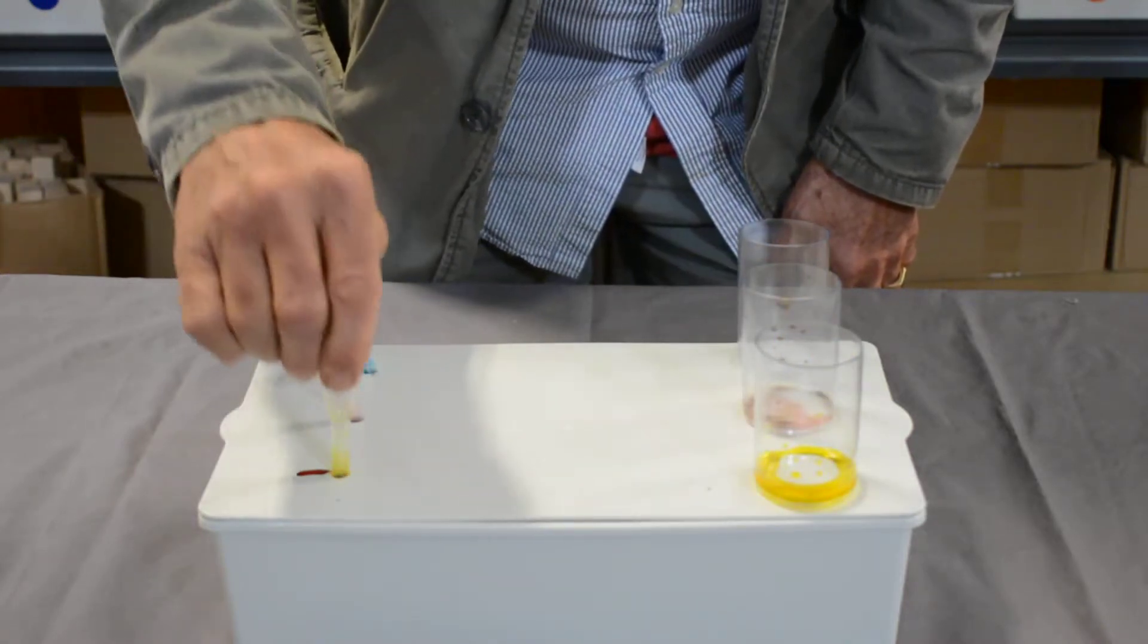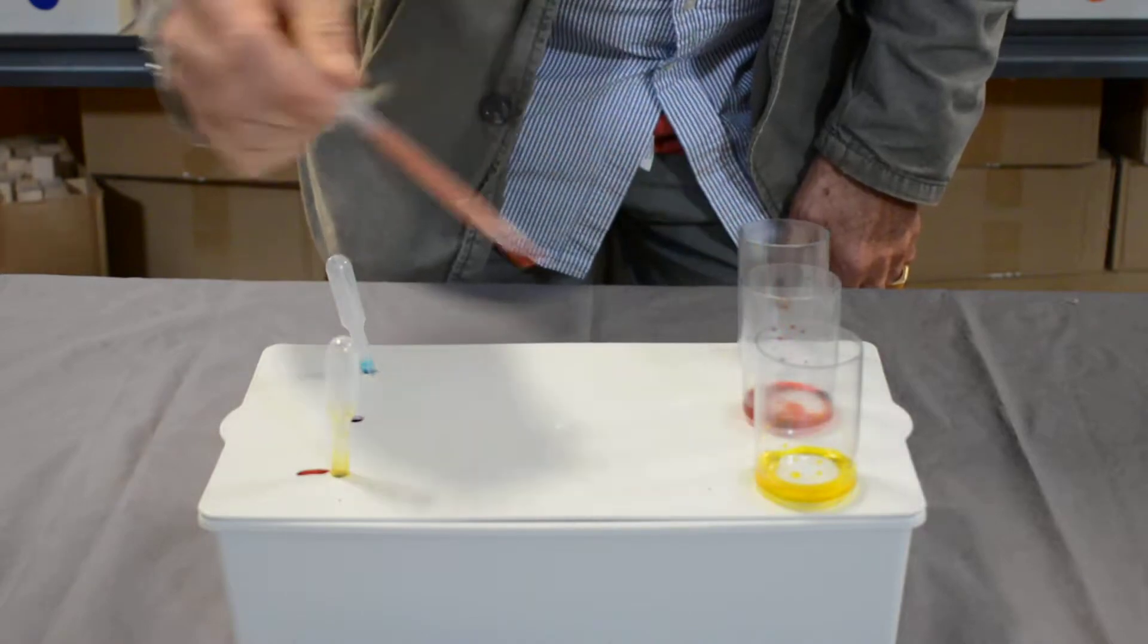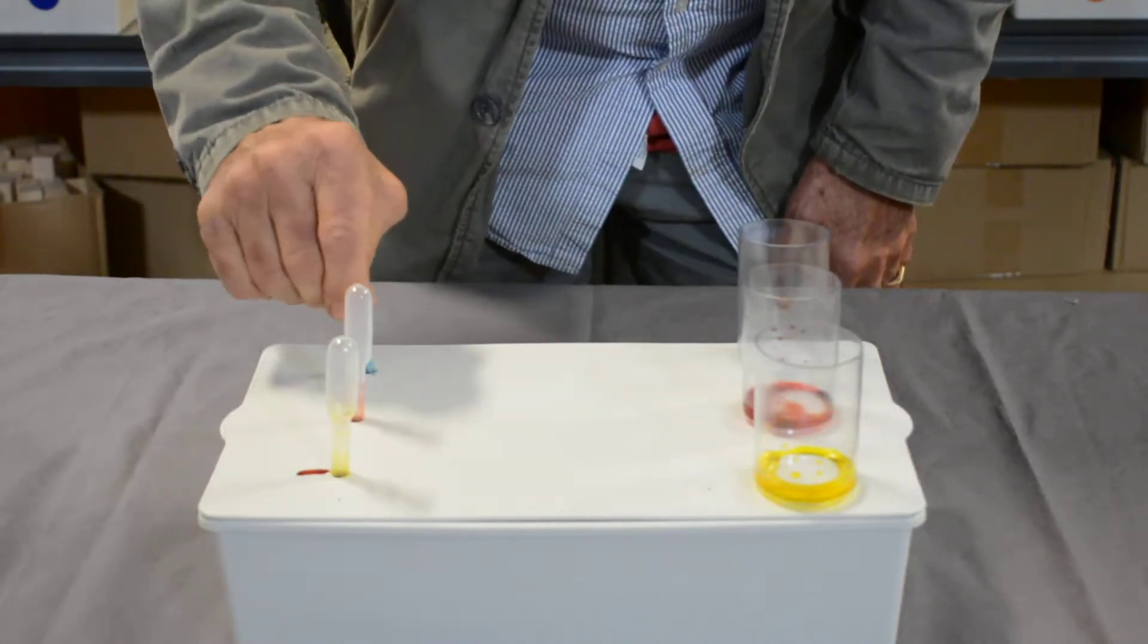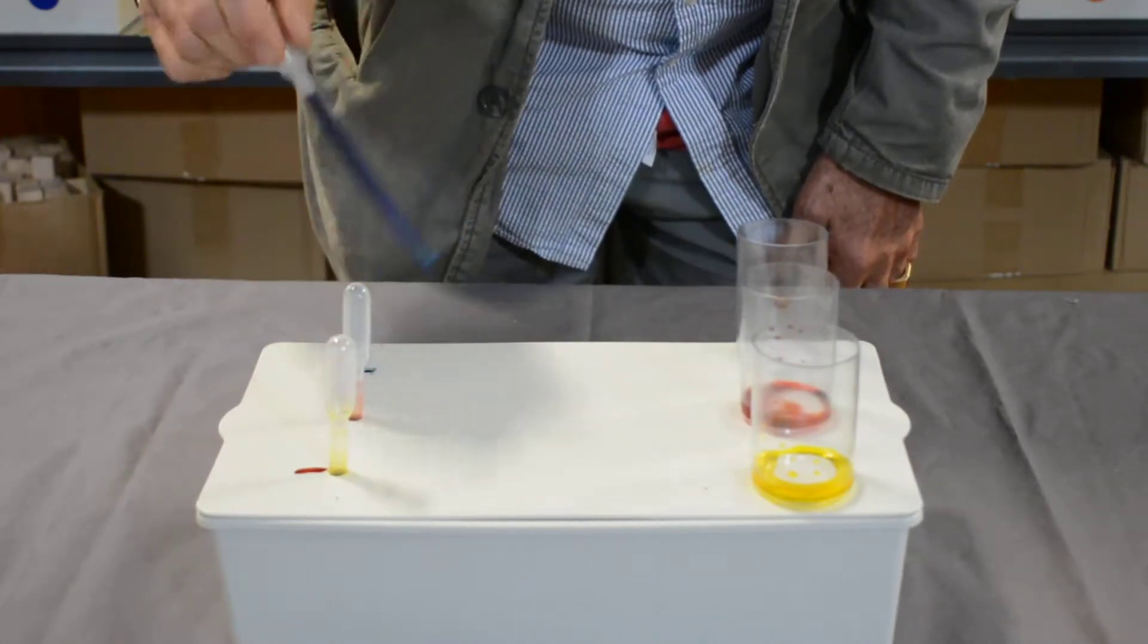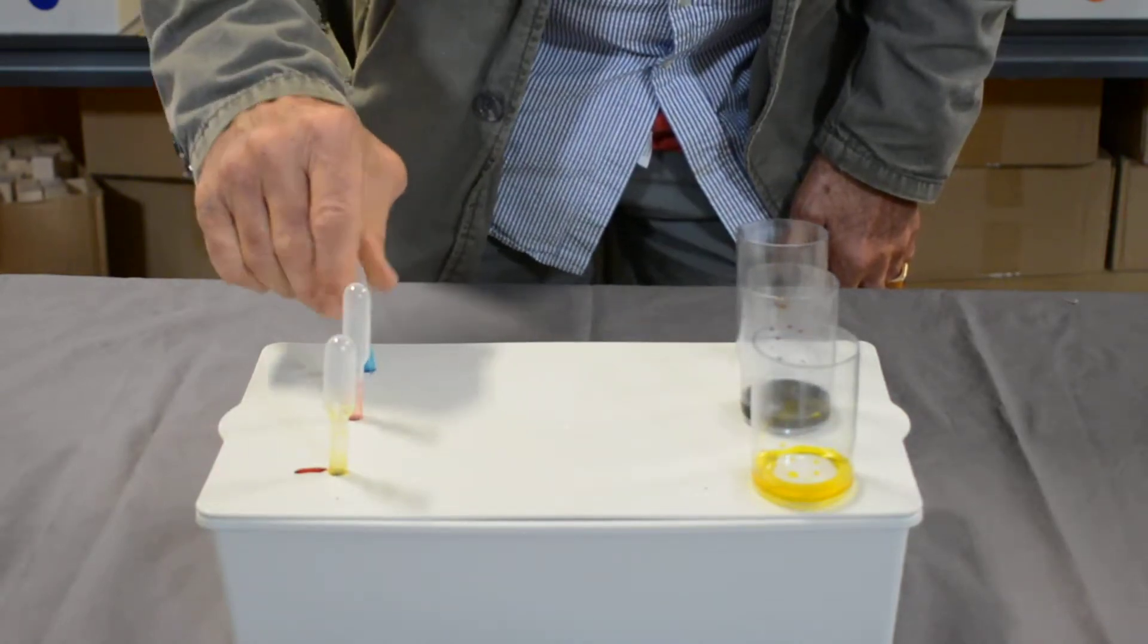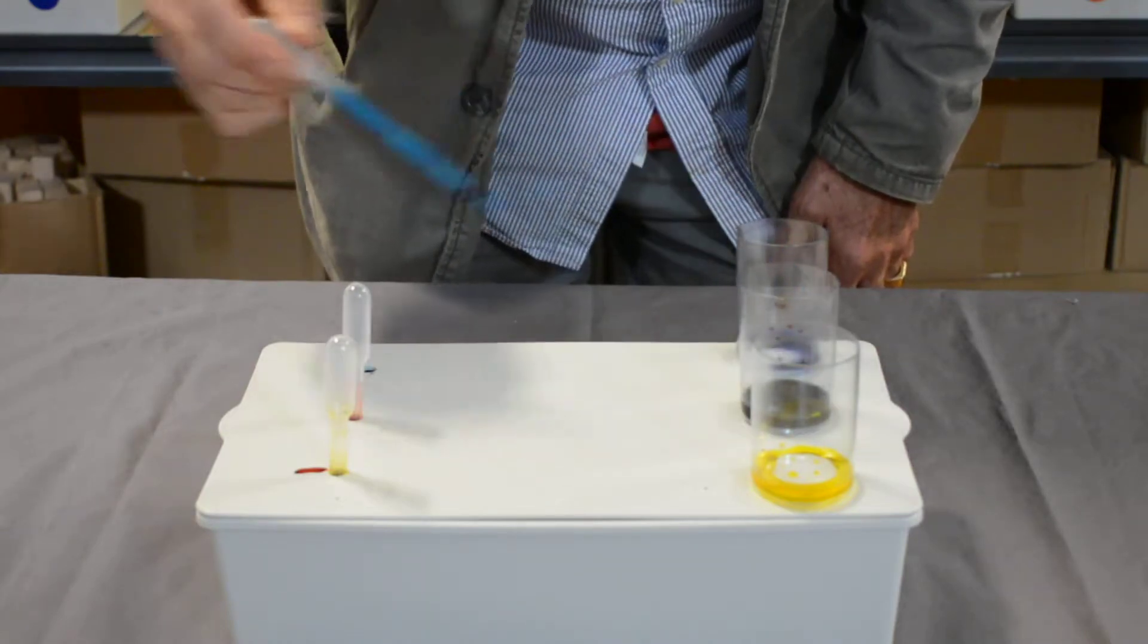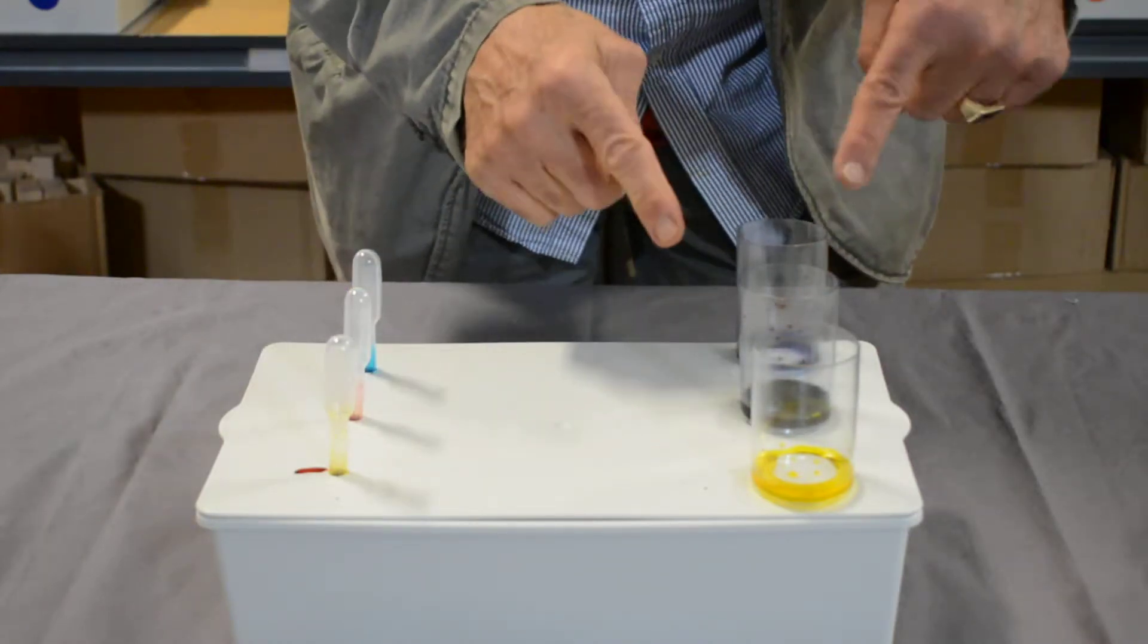So you have yellow, and you have red, and you have blue. And that's the wrong container. Alright, we all make mistakes. There's the blue, and here's the blue. But you can see where you can mix colors too to get other colors.